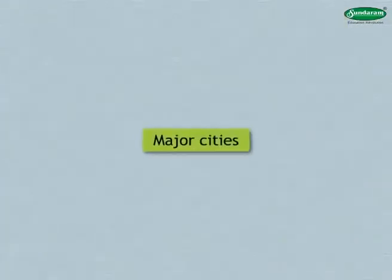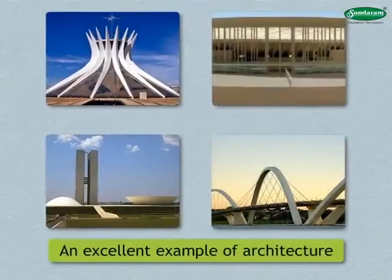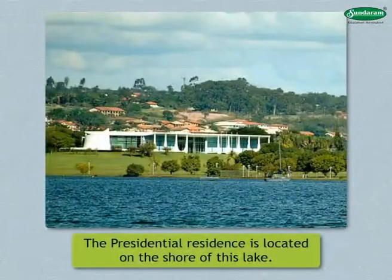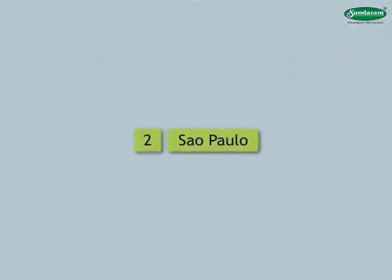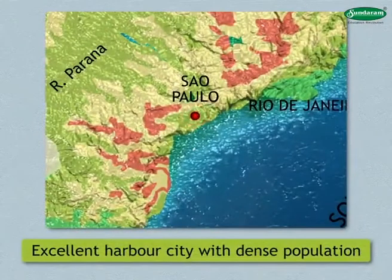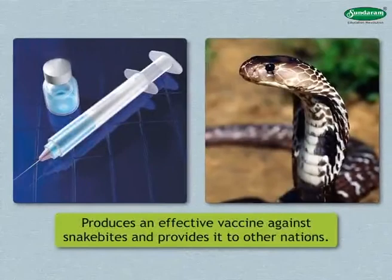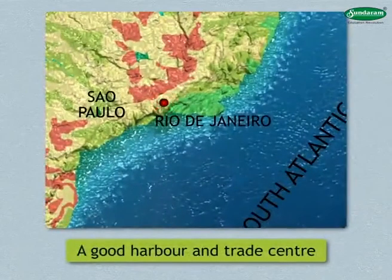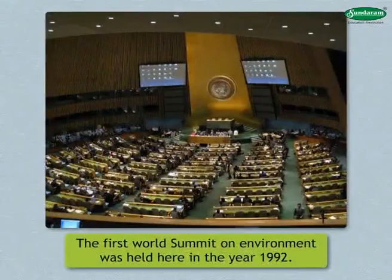Major cities include: Brasilia, the new well-planned capital, considered an excellent example of architecture, with a V-shaped lake surrounding the administrative building and the presidential residence on its shore. Sao Paulo is an excellent harbor city with a dense population; the Butantan Institute there produces an effective vaccine against snake bites. Rio de Janeiro is a good harbor and trade center, and was the earlier capital of Brazil; the first World Summit on Environment was held there in 1992.